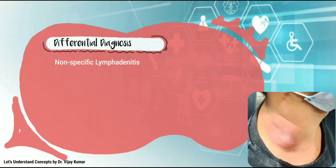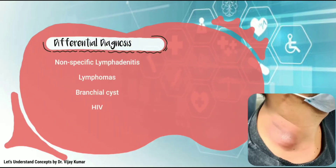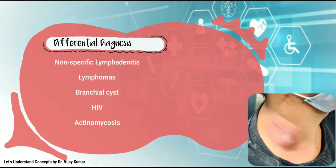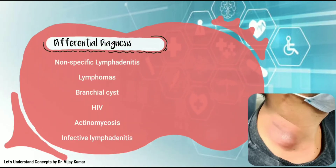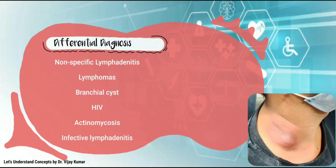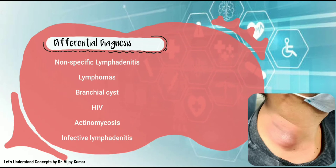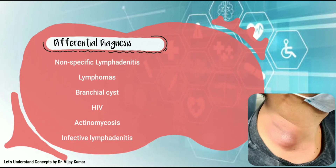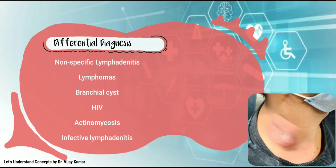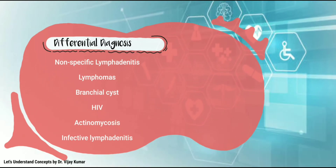Differential diagnosis includes non-specific lymphadenitis, lymphomas, branchial cyst, HIV, actinomycosis, and infective lymphadenitis.